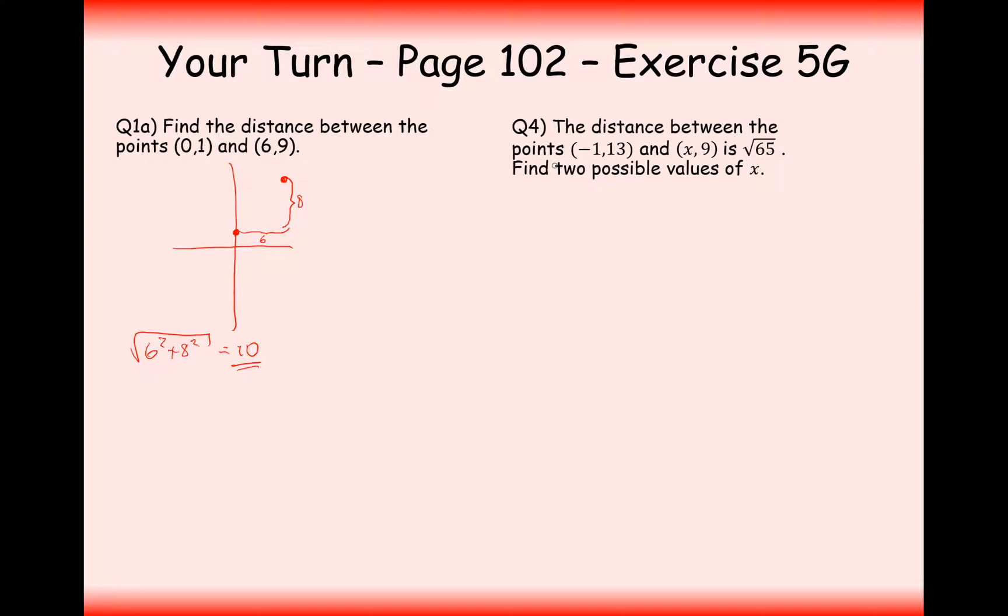Moving on to question 4, a slightly trickier one. The distance between two points, (-1,13) and (x,9), is the square root of 65. Find the two possible values of x. Now what does it mean by two possible values of x? Well, if I plot out my coordinate at -1, 13, so here, definitely know where that one is, and the coordinate x, 9.